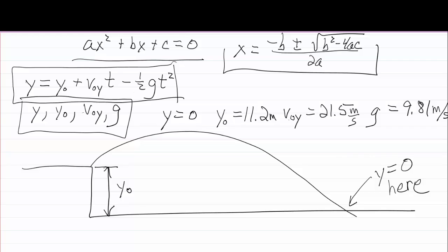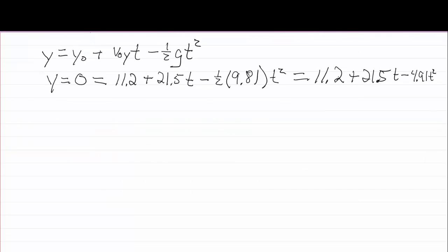Let me rewrite our equation with these numbers plugged into it. Just by replacing variables with numbers, this equation probably looks less frightening than it did before. Okay, I've simplified it further here. I have 11.2 plus 21.5 t minus 4.91 t squared.